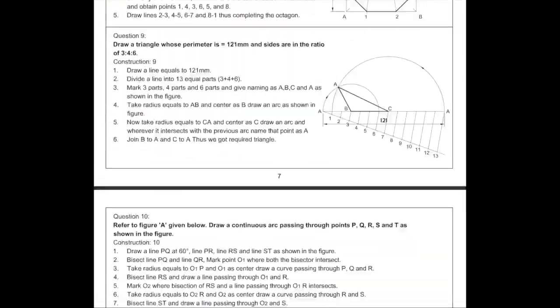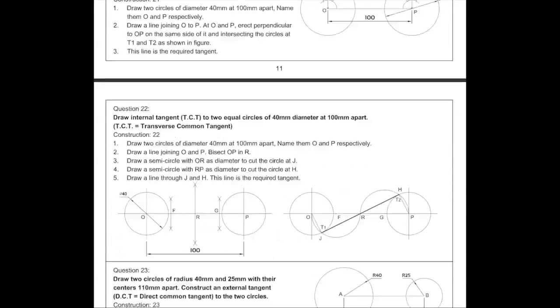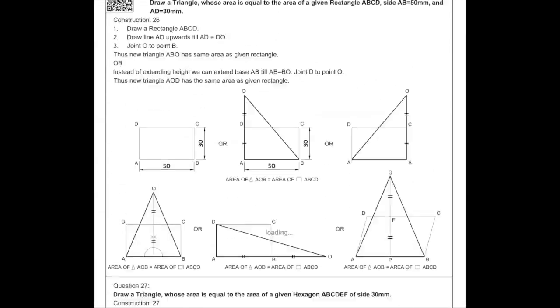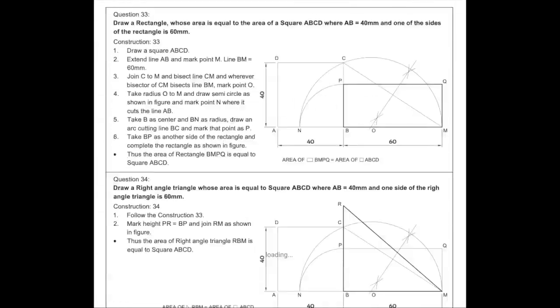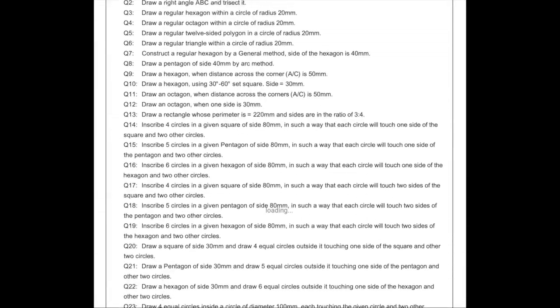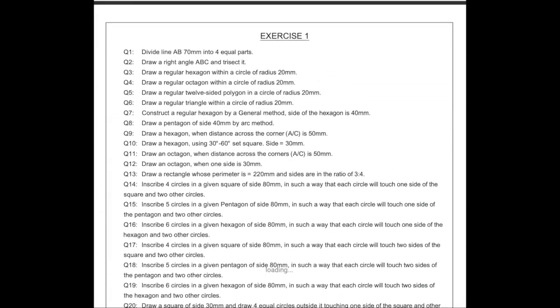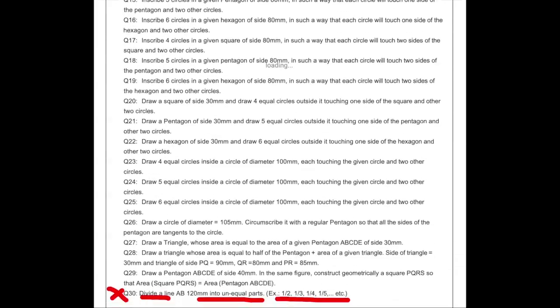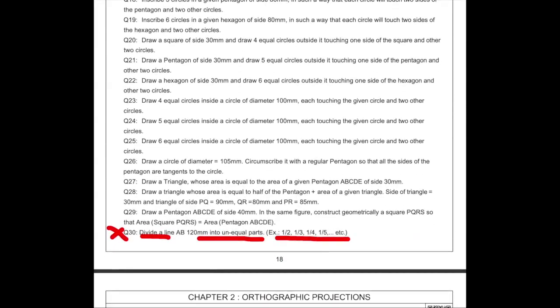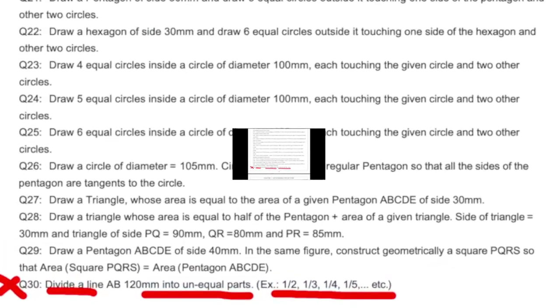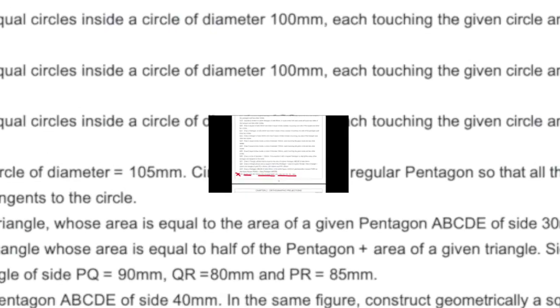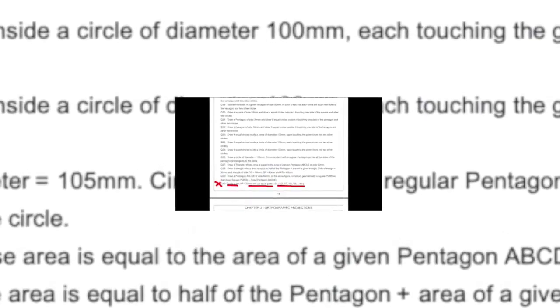In geometrical construction, they have removed one question: how to divide a line into unequal parts. It is in exercise one, the last sum, so you can see how to divide a line into unequal parts there, but that is not in the 2021 paper.